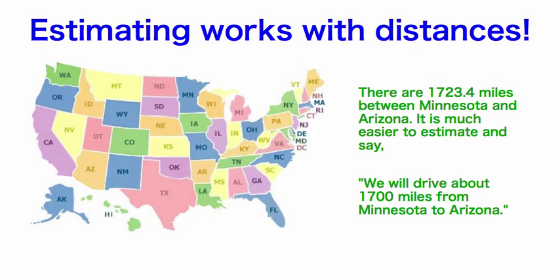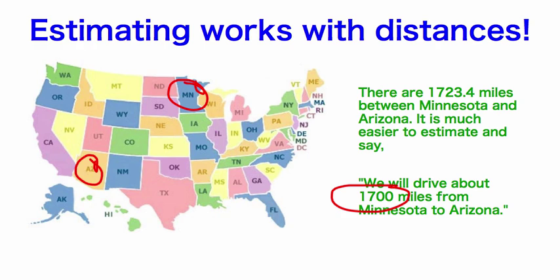Estimating also works with distances. You've probably heard your parents or grandparents say while driving somewhere, 'It's about two hours' or 'It's about 100 miles.' In this example, there are about 1,723.4 miles between Minnesota and Arizona. It's much easier to estimate and say we'll drive about 1,700 miles. We don't need to be exact when talking about distances on the road.